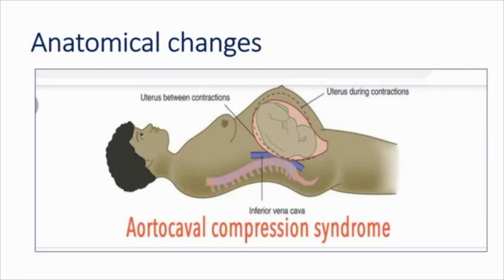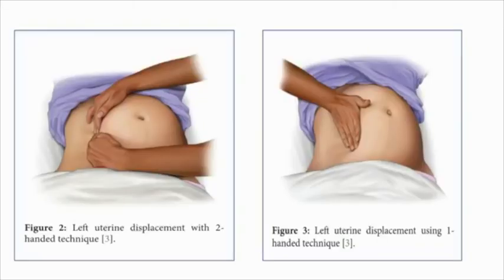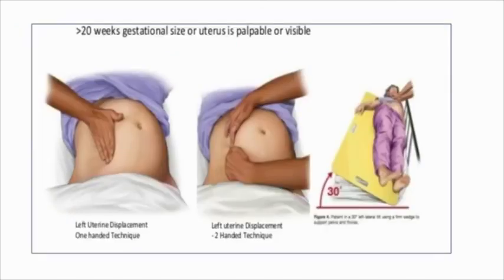Do not forget left uterine displacement, which is to be done in all pregnant women with more than 20 weeks of gestation. When you enter the OT for giving spinal or anesthetizing a patient for caesarean section, remind yourself that you are going to give left uterine displacement — preemptively and whenever there is any complication. What is the correct method? You can use either a two-handed technique or a single-handed technique, wherein you either push or pull the uterus to the other side. If you have a remotely controlled operation table, you can tilt it to 30 degrees. Use whichever method you are comfortable with to relieve aortocaval compression.